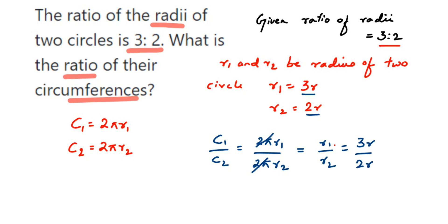So here you can see r and r are again common, so r and r will get cancelled, we'll get the answer 3 by 2. So the ratio, that is c1 upon c2, we got it as 3 by 2.